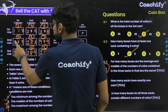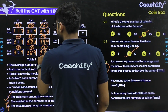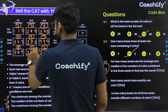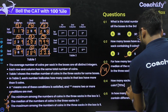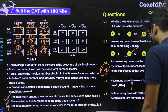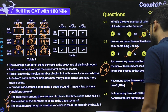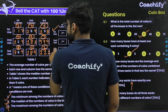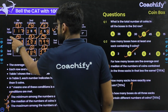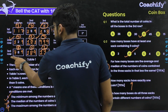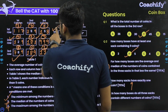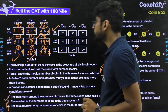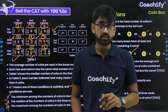Question 4: How many sacks have exactly one coin? Counting through all sacks: the correct answer is 9. Question 5: In how many boxes do all three sacks contain different numbers of coins? Counting: 1, 2, 3, 4, 5 — the correct answer is 5.